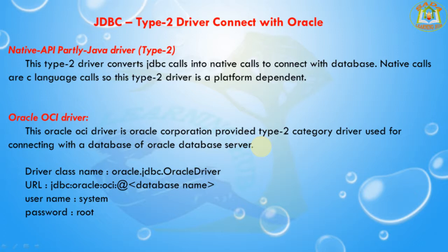To connect to the Oracle database, we need to follow some basic steps. First, we need to load our driver class name — for that we load oracle.jdbc.OracleDriver. After that, we need to frame the URL in this format: jdbc:oracle:oci:@database_name, where the database name is nothing but the service name. After that we need to provide the username and password.